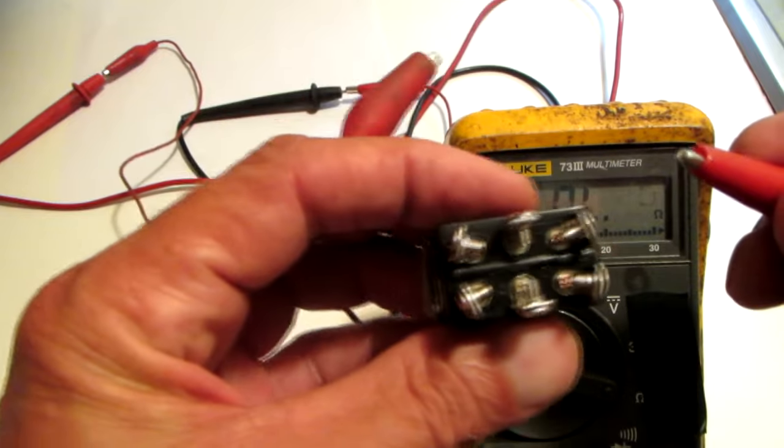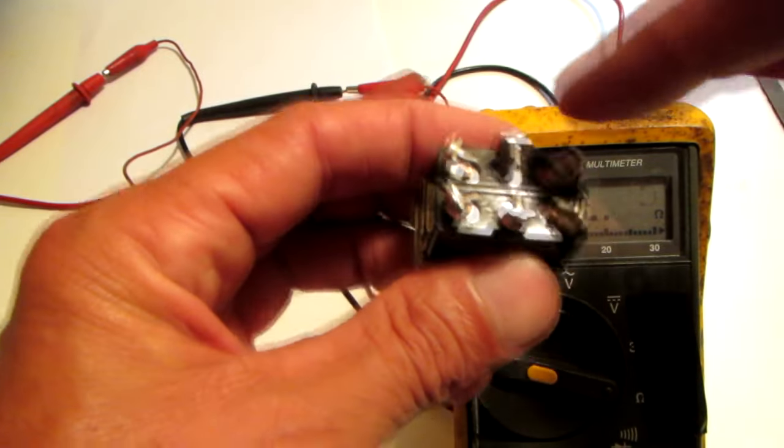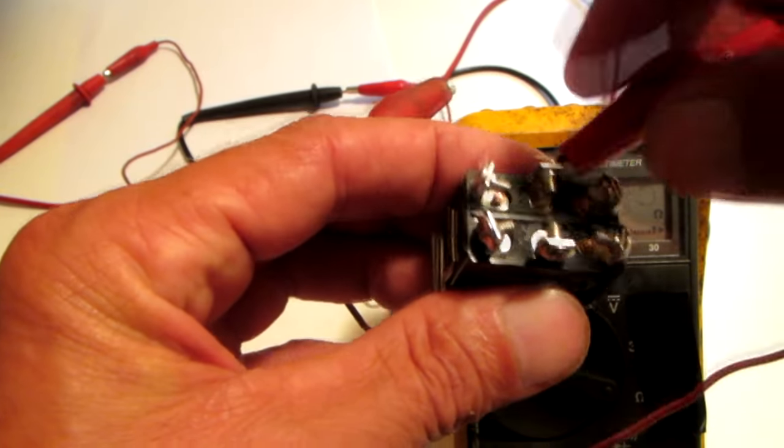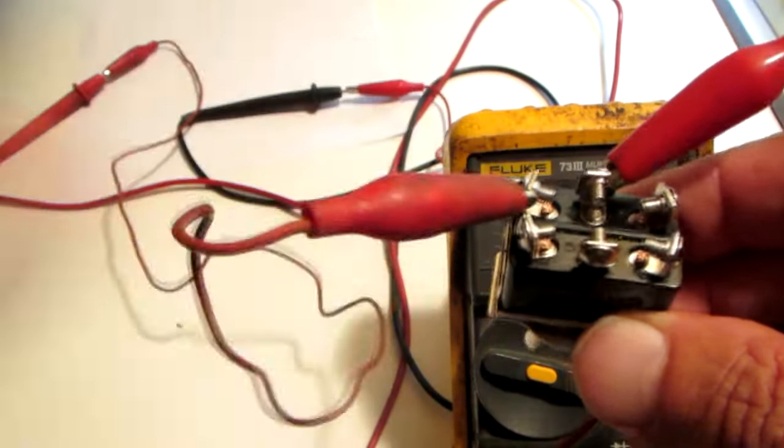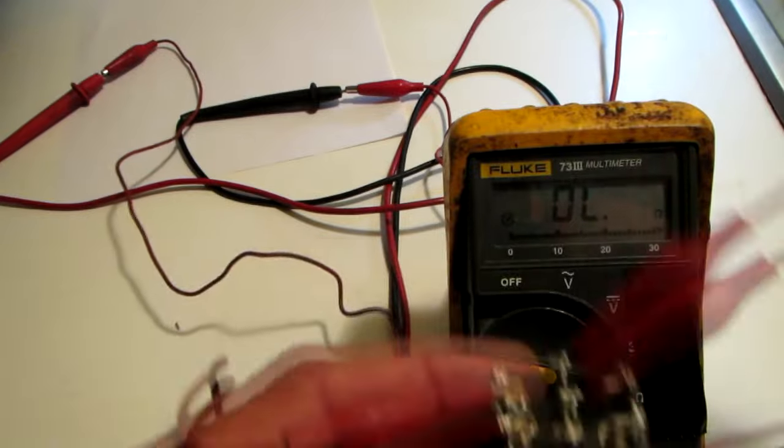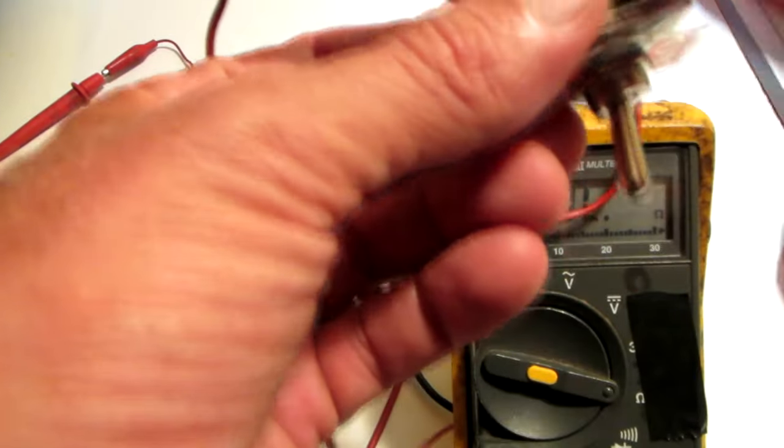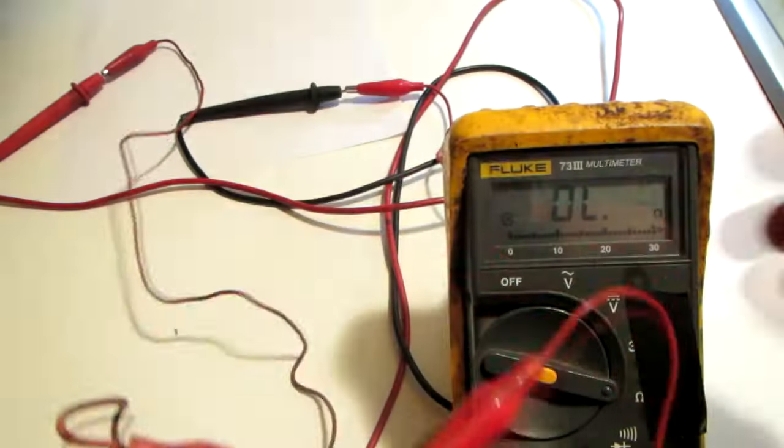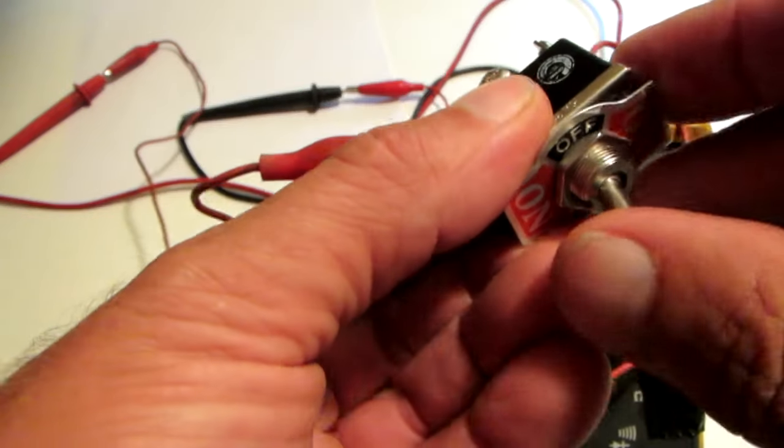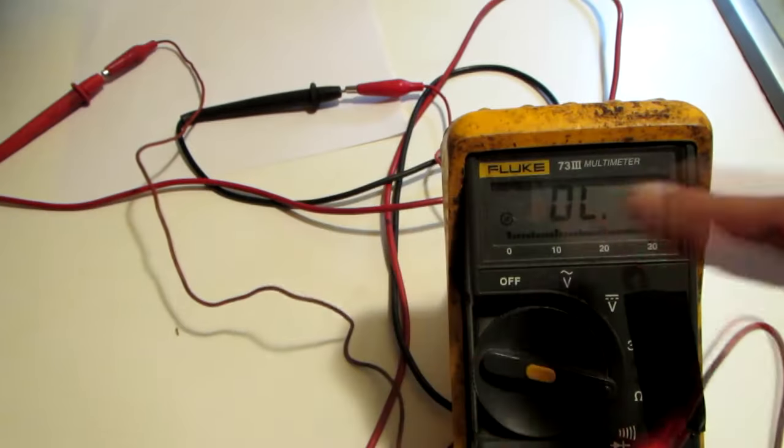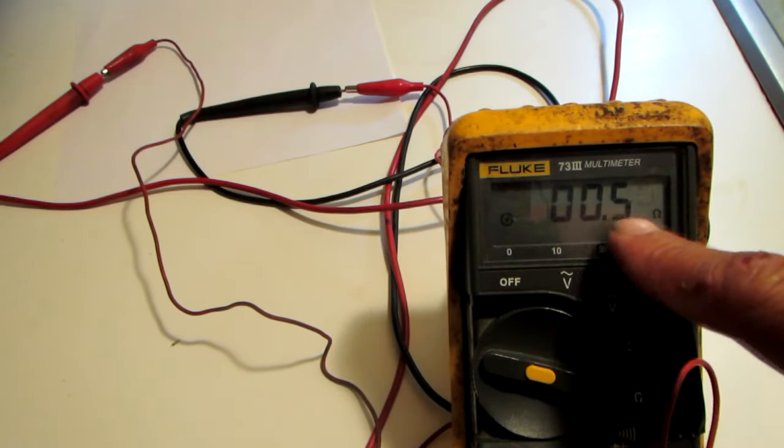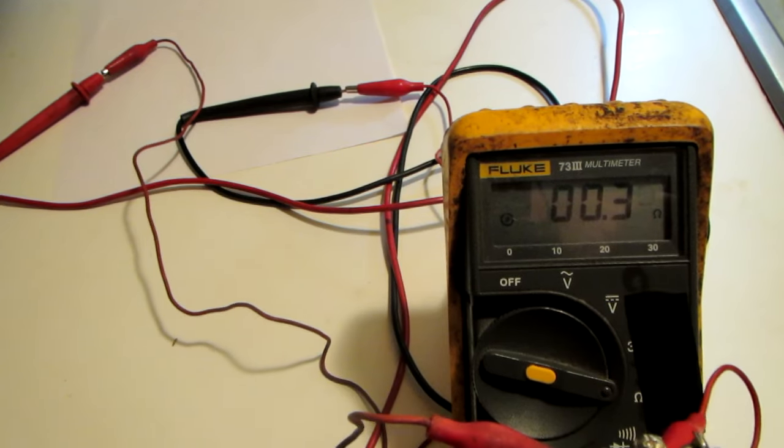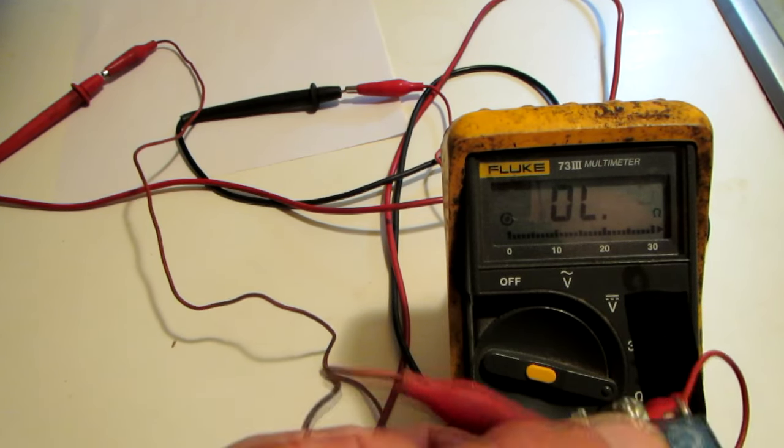Let me test this switch. We're going to put one meter lead on the one pole, and then we're going to check out on one side of the throw. You see we're reading open. The switch is pointing to the opposite throw. Read open in the off position. There's off position. We're reading open. And then take it and put it in the throw position. 0.6, 0.4 ohms. So we've got a good switch there.